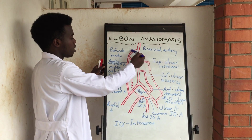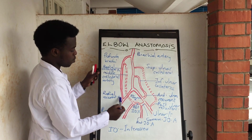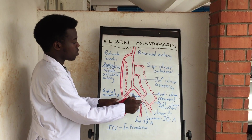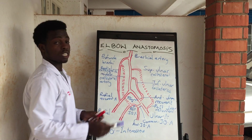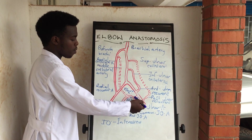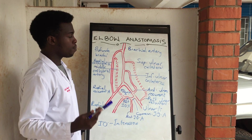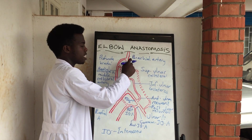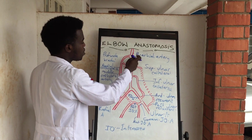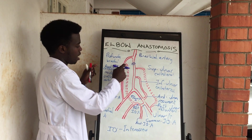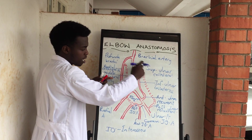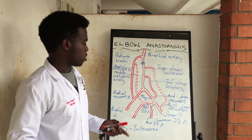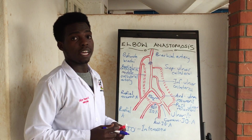The radial collateral artery anastomizes with the radial recurrent artery, anterior to the lateral epicondyle. The interosseous recurrent artery anastomizes with the middle collateral artery at the posterior aspect of the arm. This is the elbow anastomosis — its significance is that in case of a blockage or embolism at a point, there will be an alternative route taken, avoiding ischemia of the body region. It is a protective mechanism in the human body. Thank you for watching — don't forget to like and subscribe.